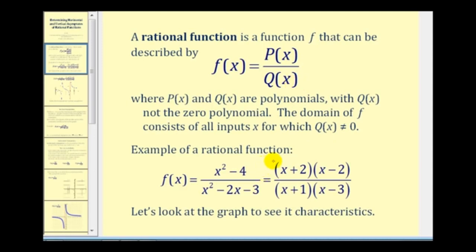Here's an example of a rational function, where the numerator is the polynomial x squared minus four, and the denominator is the polynomial x squared minus two x minus three. It's often helpful to express a rational function in factored form as we see here.